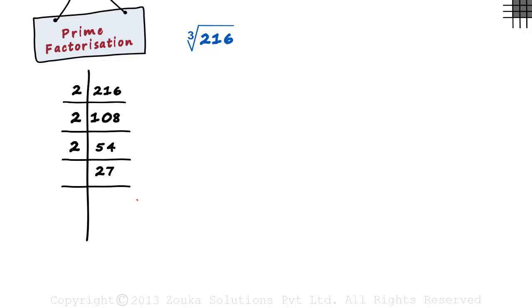We stop when we get a prime number here. 27 is not a prime number and hence we continue with the same process. Now the prime number that is a factor of 27 is 3. So we write 3 here.